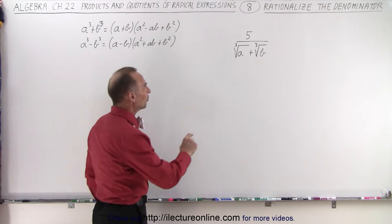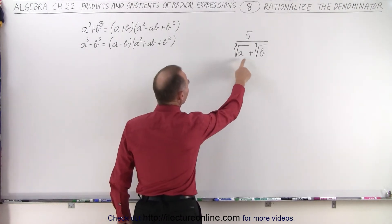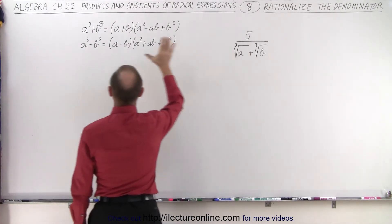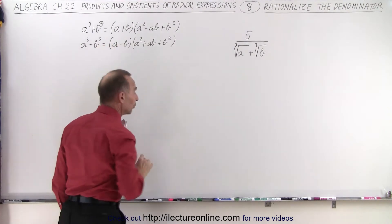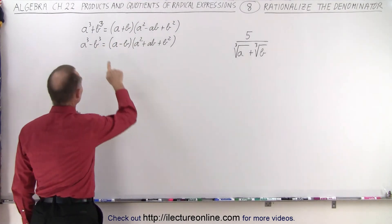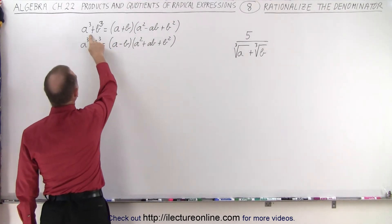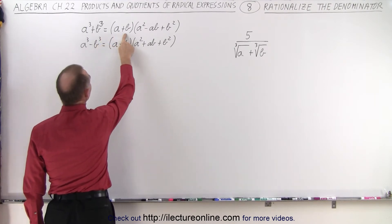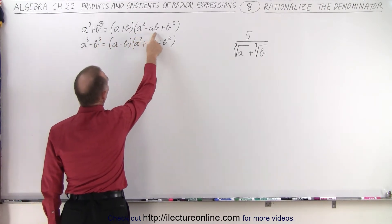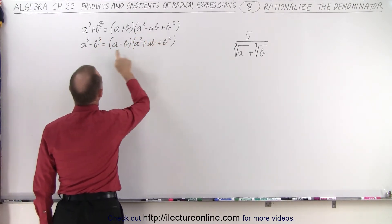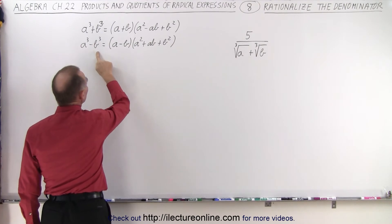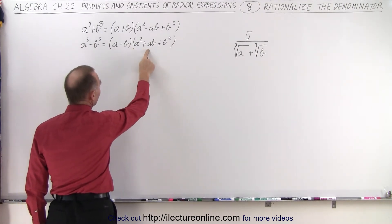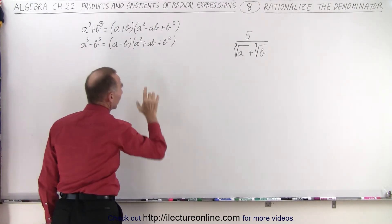Notice that we have the cube root of a plus the cube root of b. Something we've learned a while ago: a cubed plus b cubed is equal to a plus b times a squared minus ab plus b squared, or a cubed minus b cubed is equal to a minus b times a squared plus ab plus b squared.